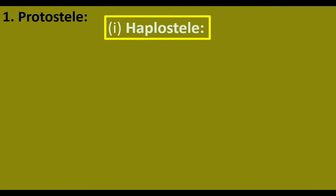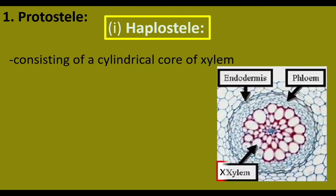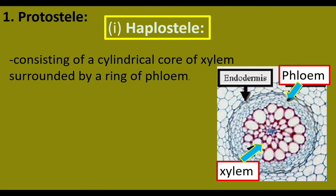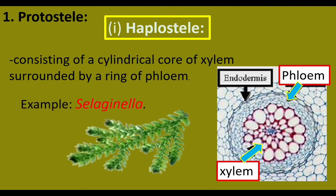Haplostele is the first type of protostele. In haplostele, the xylem forms the central cylinder, surrounded by a ring of phloem.